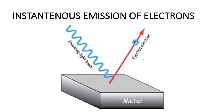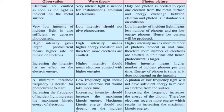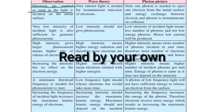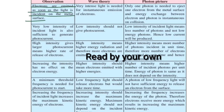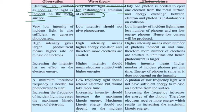The comment section is open 24/7. Now let's look at observations under wave theory and the photon picture. The first observation: electrons are emitted as soon as light is incident on the metal surface — I've already explained this orally. In wave theory, very intense light is needed for instantaneous emission of electrons. In the photon picture, only one photon is needed to eject one electron, and energy exchange between electron and photon is instantaneous on collision.